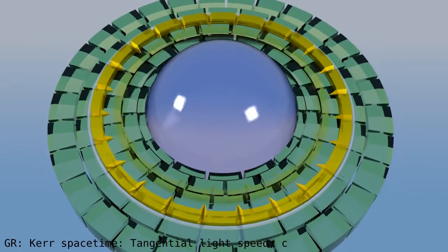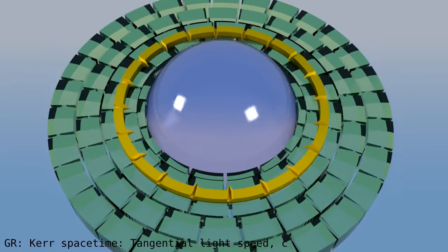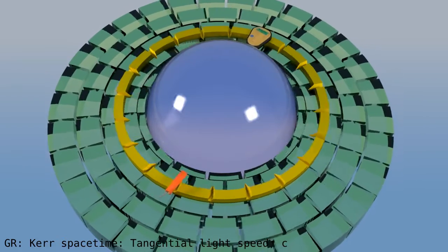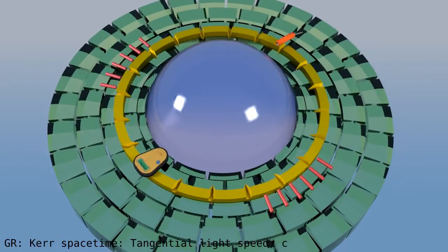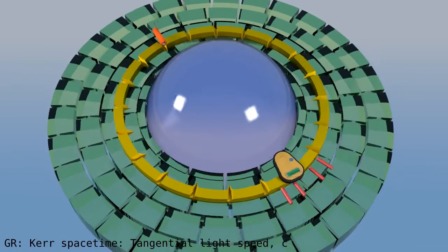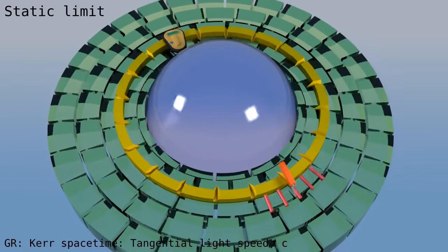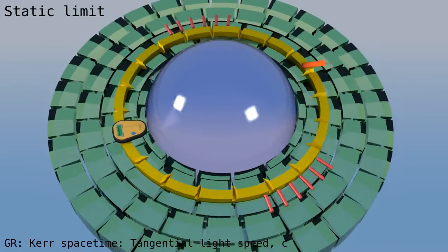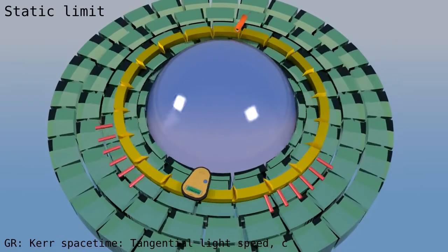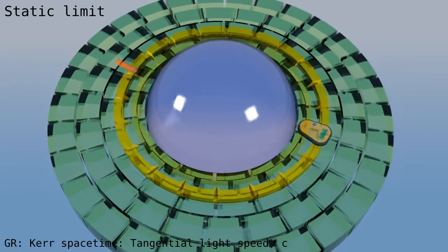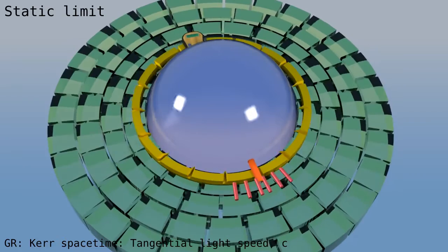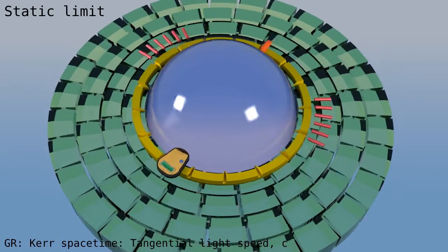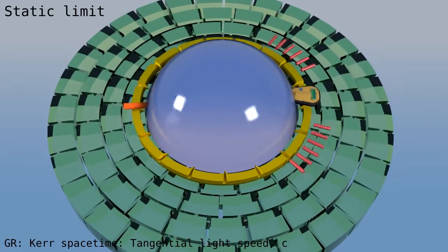As we move closer to the black hole, spacetime moves faster and the speed of light slows down. And at some point, the speed of light is the same as the speed of spacetime. What happens then? Well, the flash that tries to go against the motion of spacetime will look suspended from our viewpoint. This radius is called a static limit. As we move even closer to the black hole, inside the static limit, light can no longer keep up with the moving spacetime. All light is swept along with the moving spacetime. It's no longer possible to stay still.